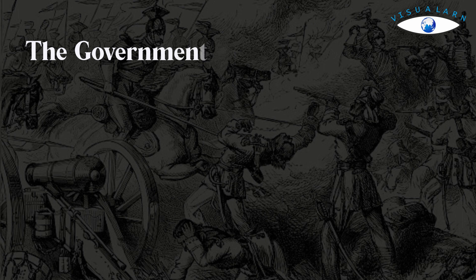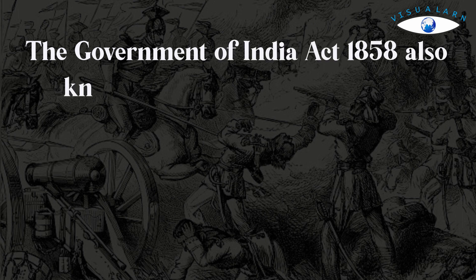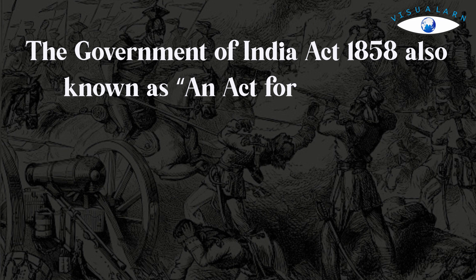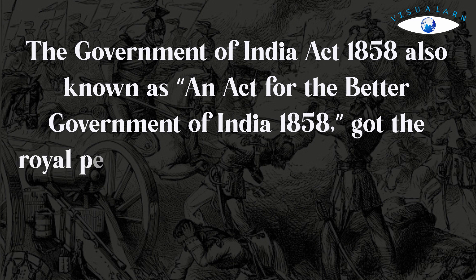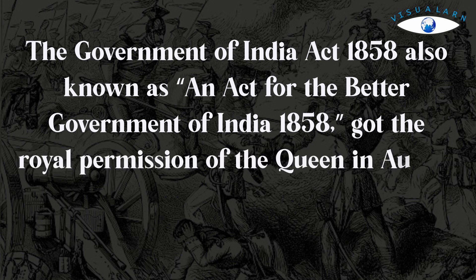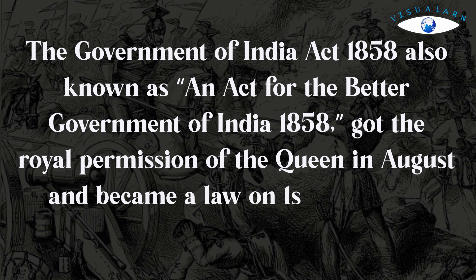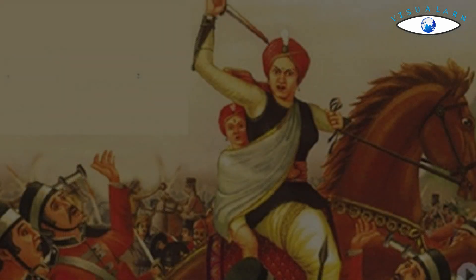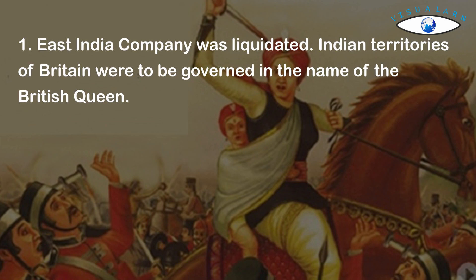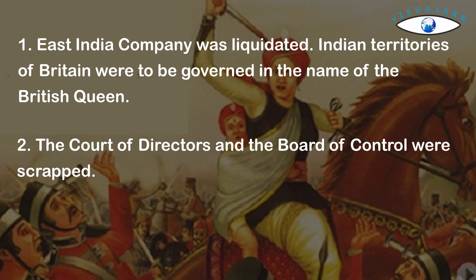This act provided that India was to be ruled in the name of the Crown. The Government of India Act 1858, also known as An Act for the Better Government of India 1858, received royal assent from the Queen in August and became law on 1 November 1858. Key provisions included the liquidation of the East India Company, Indian territories of Britain to be governed in the name of the British Queen, and the Court of Directors and Board of Control were scrapped.